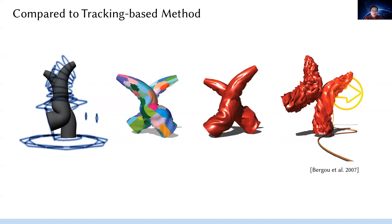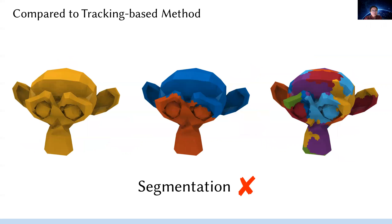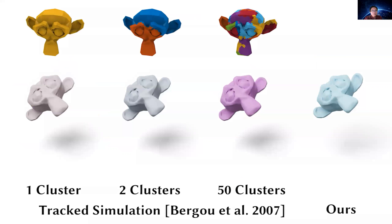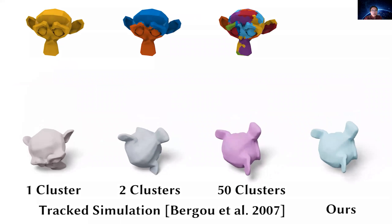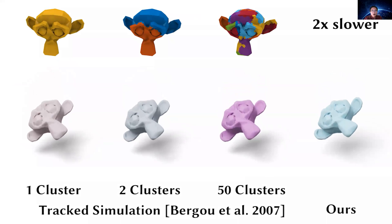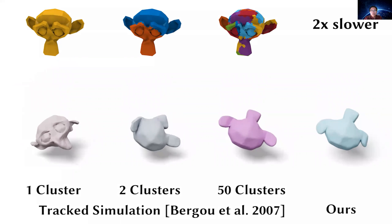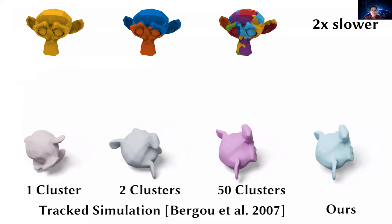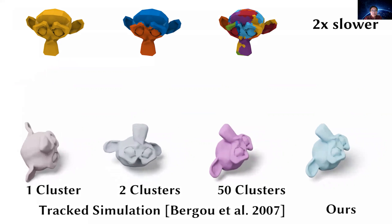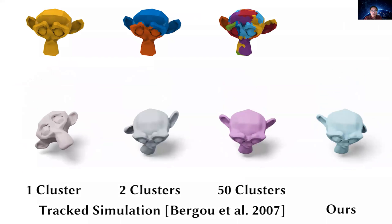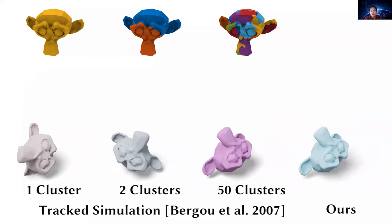In addition, tracking-based methods track input animations by weak constraints defined over patches. The output is sensitive to the distribution and number of patches. Problems occur at either extreme. As you could see, it shows poor tracking when cluster number is small, or shows too stiff result when there are too many clusters. Finding a good balance is an additional burden for the user. Our method does not require clustering at all.